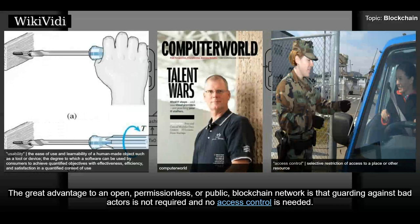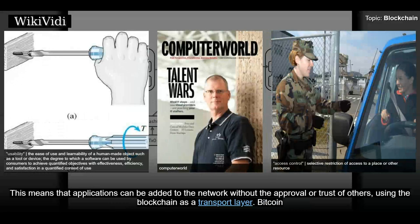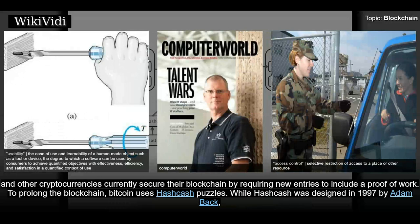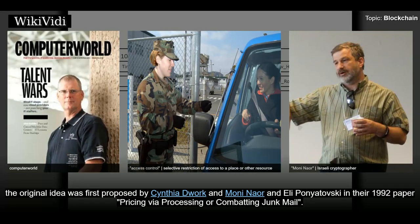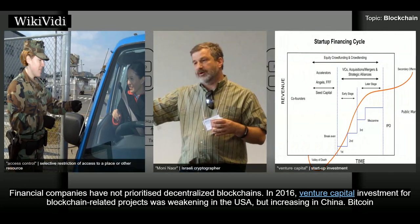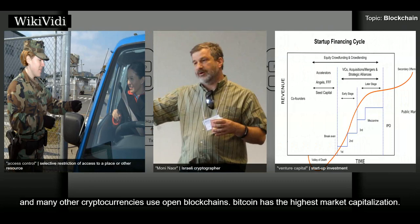The great advantage to an open, permissionless, or public blockchain network is that guarding against bad actors is not required and no access control is needed. This means that applications can be added to the network without the approval or trust of others, using the blockchain as a transport layer. Bitcoin and other cryptocurrencies currently secure their blockchain by requiring new entries to include a proof of work. To prolong the blockchain, Bitcoin uses hashcash puzzles, while hashcash was designed in 1997 by Adam Back. Financial companies have not prioritized decentralized blockchains. In 2016, venture capital investment for blockchain-related projects was weakening in the USA but increasing in China. Bitcoin and many other cryptocurrencies use open blockchains, and Bitcoin has the highest market capitalization.